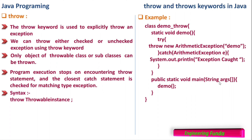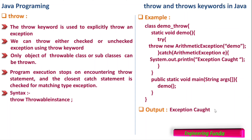In the public static void main, the method demo is called. Since demo is a static method, we don't need an object of the class to call it. The new ArithmeticException is created, thrown using the throw keyword, and handled by the catch block, which prints the message. The output is: exception caught.